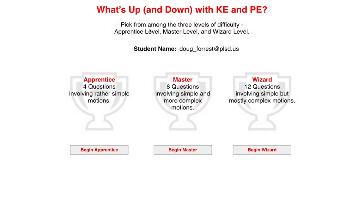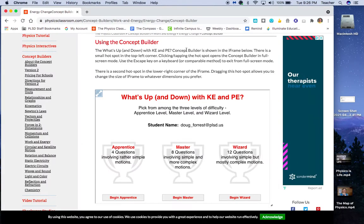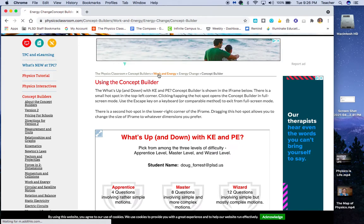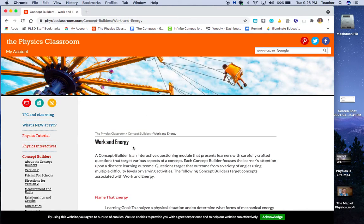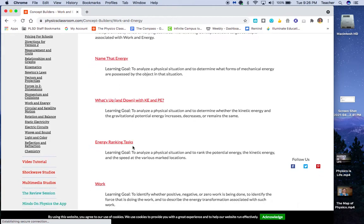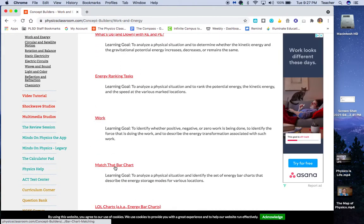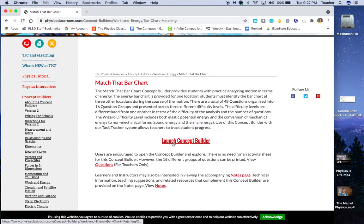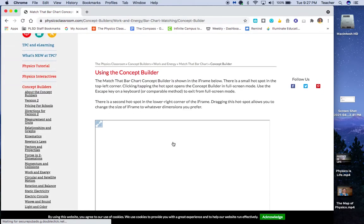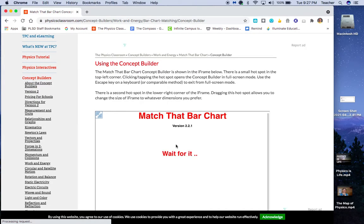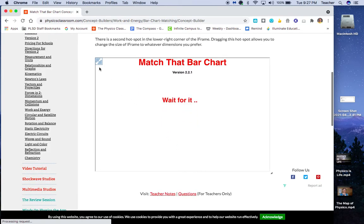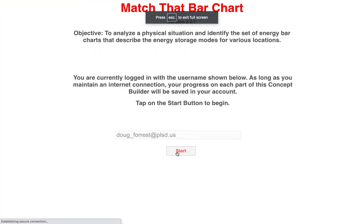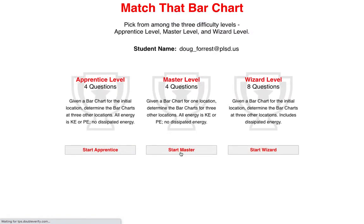So I think we've got enough with that. I'm going to go back to the main menu and escape from this. We're going to go back to the working energy ones. So the second concept builder is the match that bar chart. I'm going to actually do one from the master level and then one from the wizard level. So we're going to go to the master level.